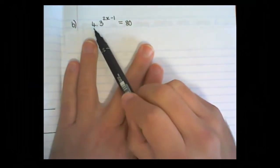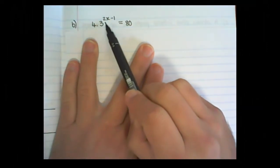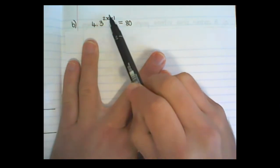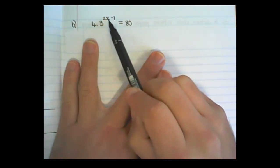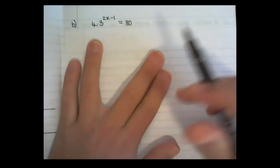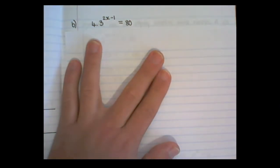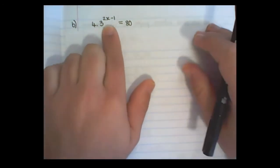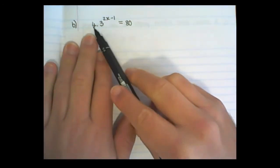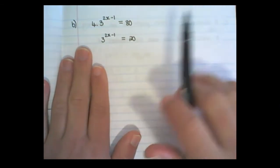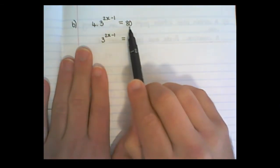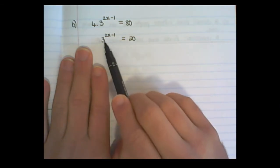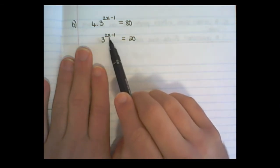In the second example, we have 4 times 3 to the power of 2x minus 1 is equal to 80. And we want to solve x. We have done similar questions in previous grades, but they worked out nicely. Now we are going to use one where it doesn't work out very simply. So first I can get rid of the 4, by dividing both sides by 4, and then that becomes 20 on the right side. I am left with 3 to the power of 2x minus 1.